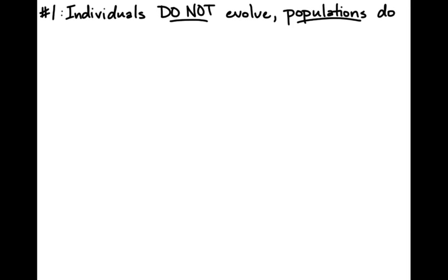There are a few points you're going to hear me emphasize over and over as I discuss evolution with you. Number one, and the really big one, is that individuals do not evolve, but populations do. Evolution — all the factors encouraging evolution — act on populations, not individuals.